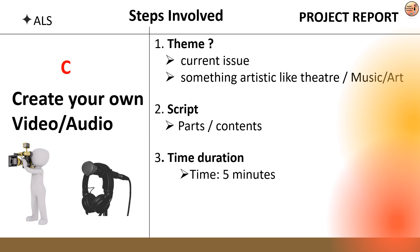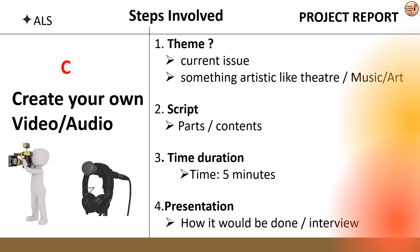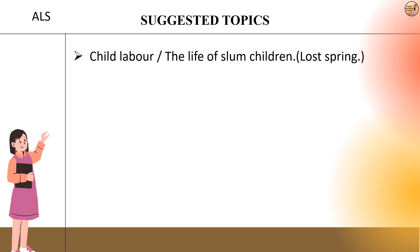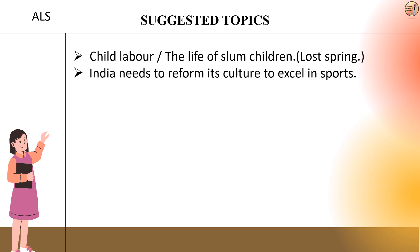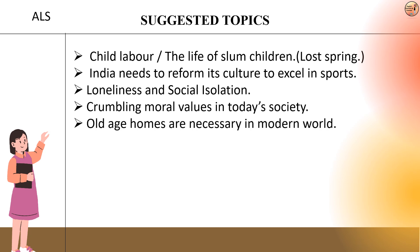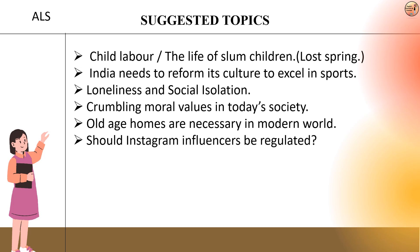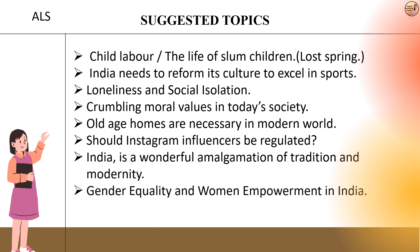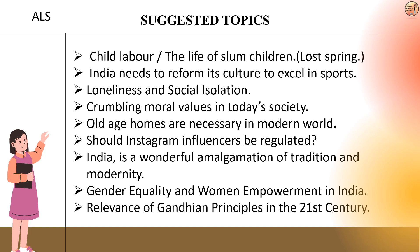The time allotted for your audio or video is 5 to 6 minutes. The last step is to decide how to present the script or report to the teacher — whether as a screenplay in the form of a narrative or as a report. A few topics which can be used for making your audio or video are: child labour and the life of slum children; India needs to reform its culture to excel in sports; loneliness and social isolation; crumbling moral values in today's society; old age homes are necessary in the modern world; should Instagram influencers be regulated; India is a wonderful amalgamation of tradition and modernity; gender equality and women empowerment in India; and relevance of Gandhian principles in the 21st century.